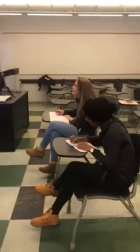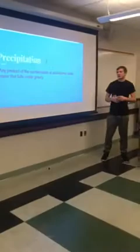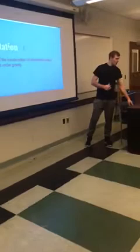Our next term is precipitation. Does anybody know what precipitation is? An example of that would be like when it's raining. Yes, like when it's raining or snowing. So precipitation is any product of condensation of atmospheric water vapor that falls under gravity. It could be snow, sleet, rain, or hail.